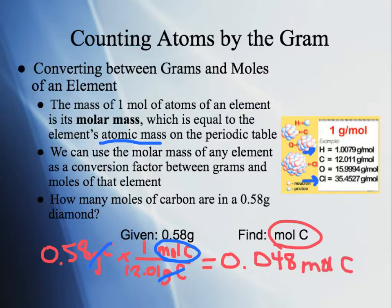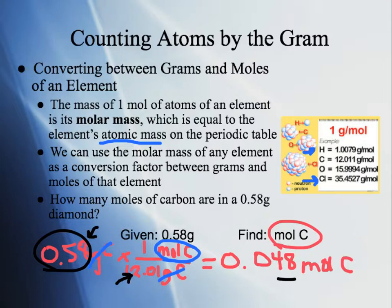That gives us 0.048 moles of carbon. Checking: we start with 2 sig figs and have 2 sig figs in our answer — good. We have units: moles of carbon. Does the number make sense? We're starting with a small number and dividing it by a bigger number, so we should end up with a smaller number — and 0.048 is definitely smaller than 0.58, so it makes sense.